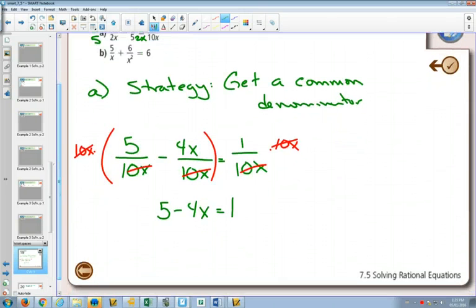We have some like terms. So I'm going to subtract 5 on both sides to put those like terms together. Divide both sides by negative 4, and we get x is equal to 1.